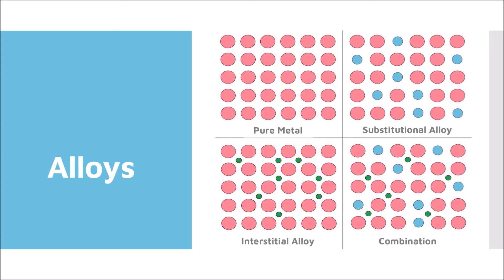Steel is an example of an interstitial alloy, where the majority of the atoms are made up of iron and there are carbon atoms inserted into the gaps between the pattern. The properties of steel are very different than the properties of iron, and there are many different types of steel that depend on the amount of carbon that has been added or if any other atoms have been added.